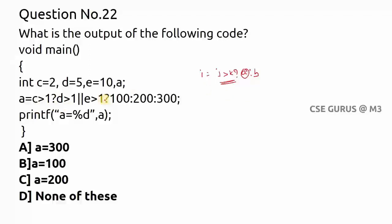There are more than one ternary operators here. First, check if c is greater than 1. If true, execute this entire code; otherwise directly assign 300. Since c equals 2, two is greater than one — that is true. Now within the true branch, check if d is greater than 1: five is greater than one, which is true.